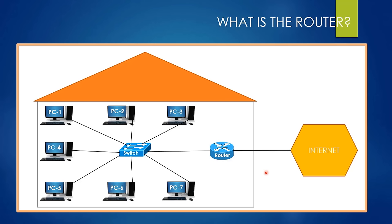We now have everything necessary to connect to the internet using these computers. Let's see the basic tasks of the switch and router. These seven computers in the office can communicate with each other thanks to the switch. Let's say PC one wants to communicate with PC five — it will send a packet to PC five. The packet goes to the switch, the switch learns the destination, and sends the packet to its destination. This is how two computers in the same LAN communicate.